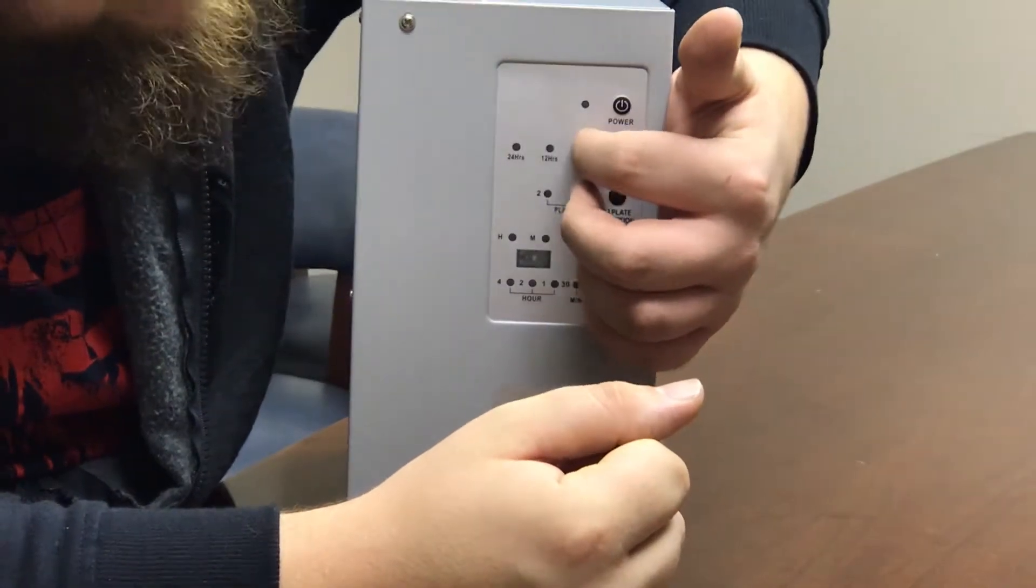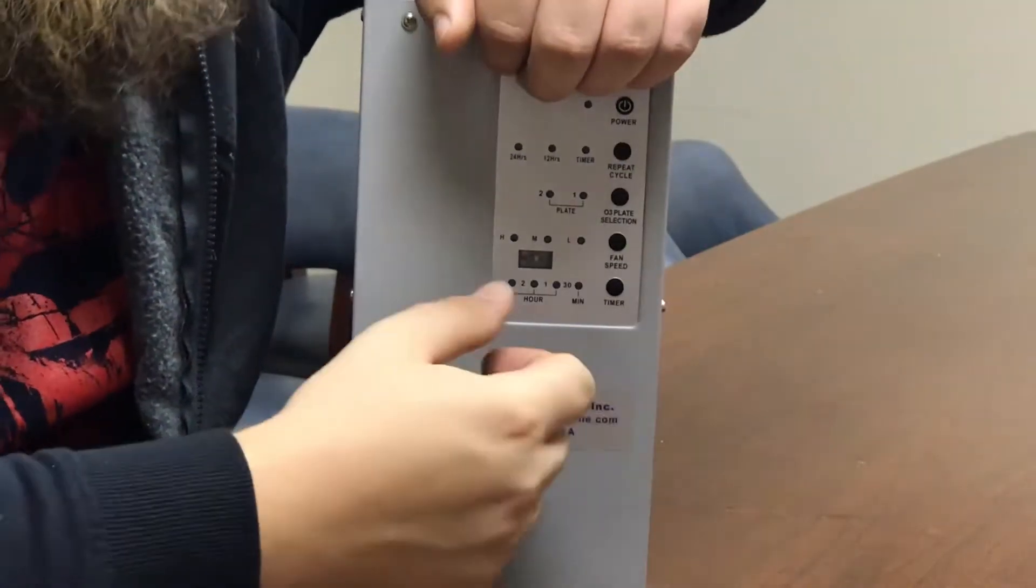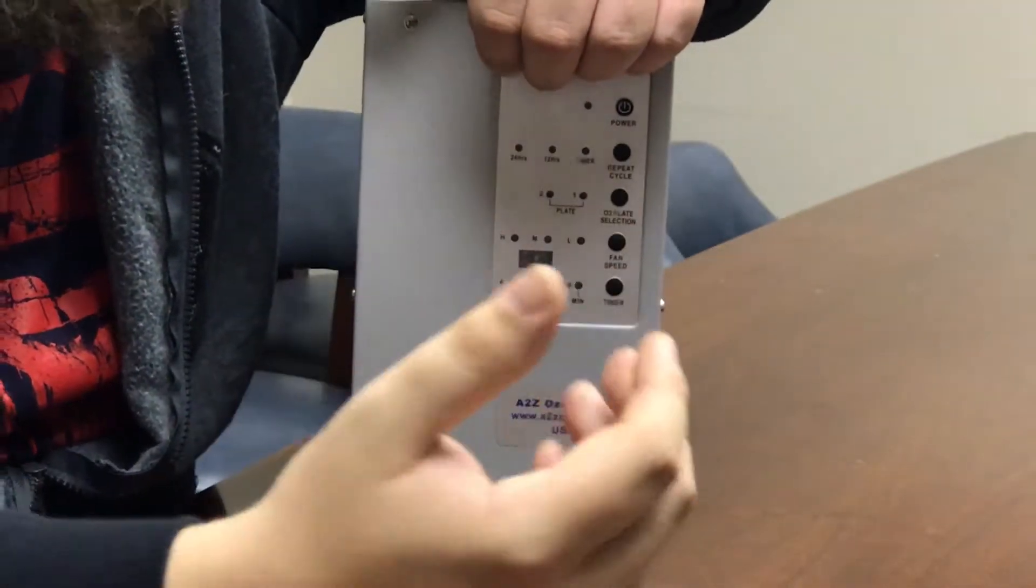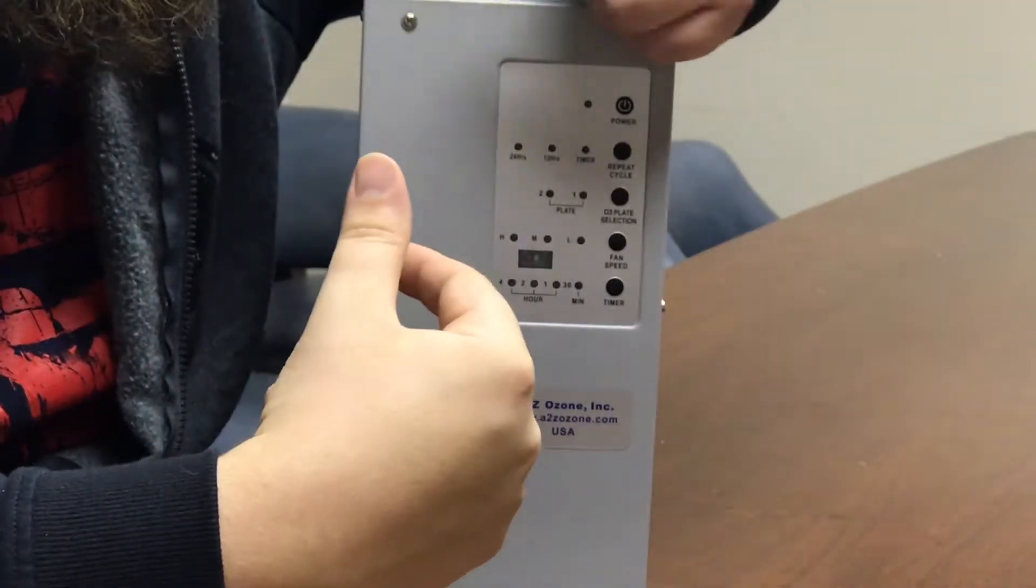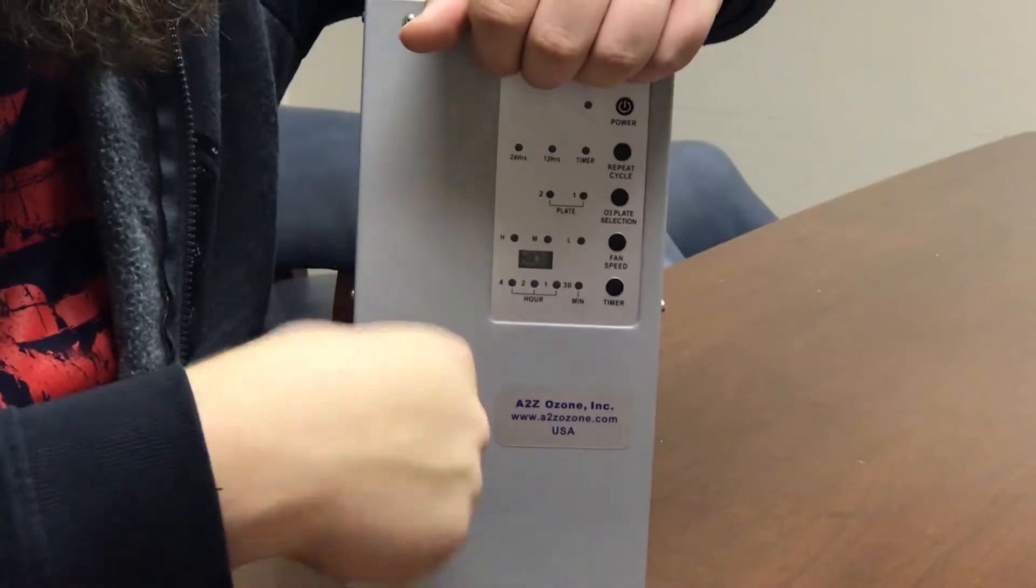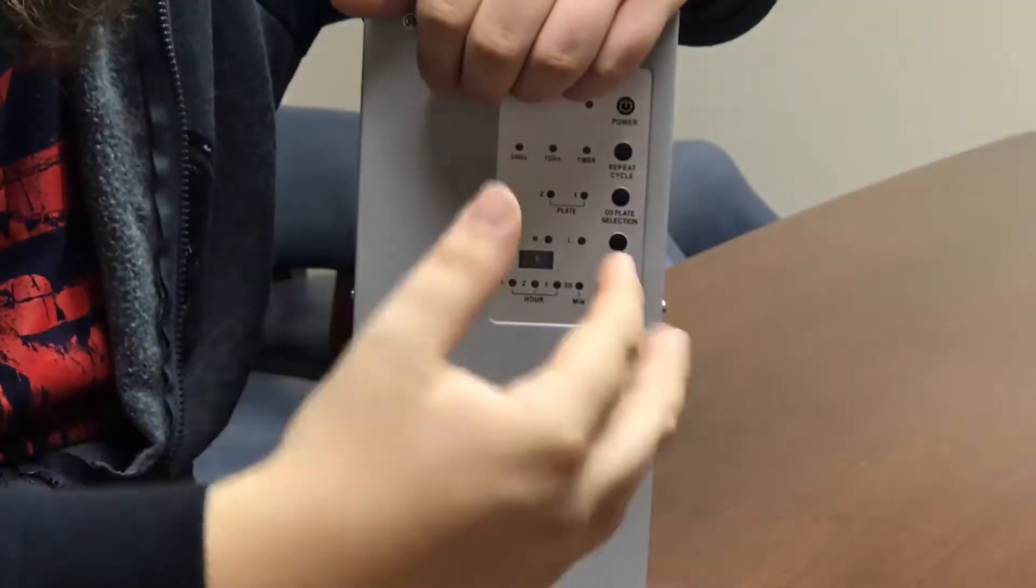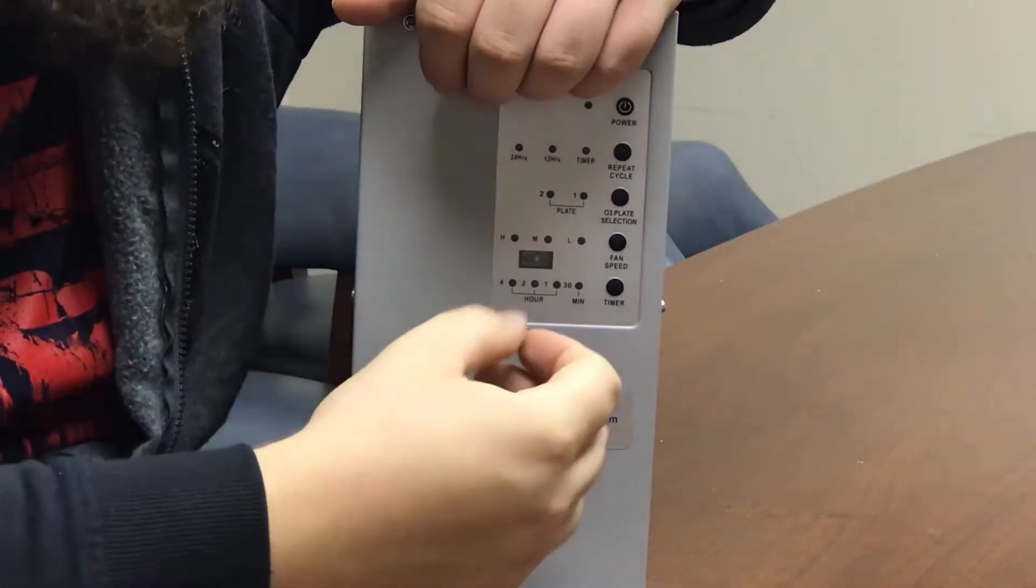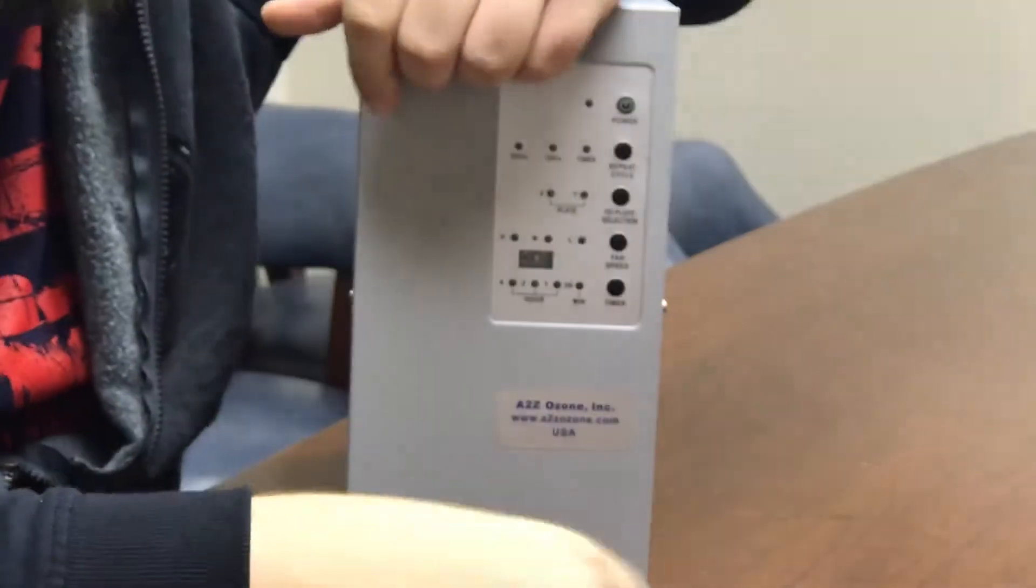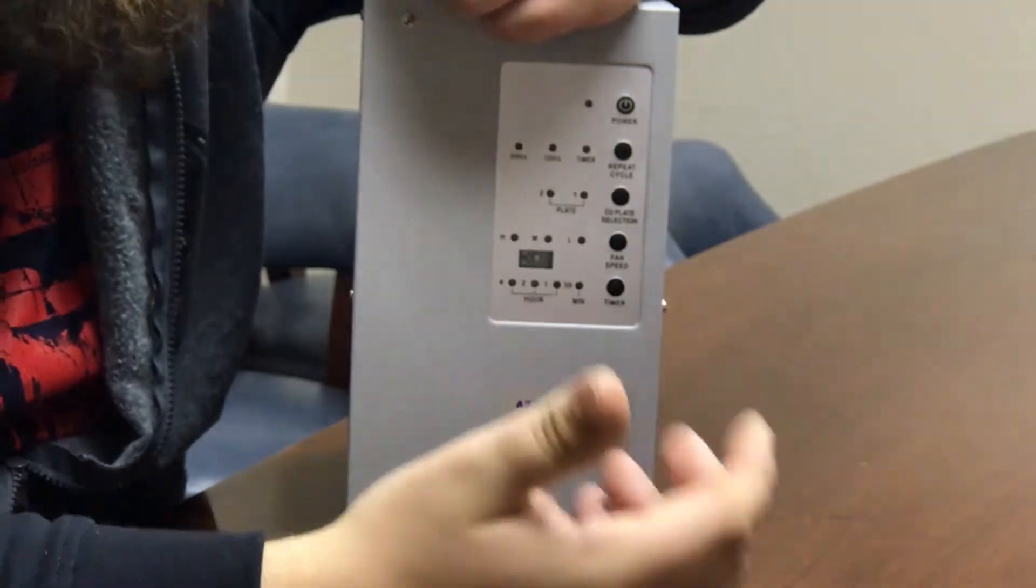You can set your repeat cycle timer for 24 hours. Your unit would run for the half hour and then go into its cooldown cycle for the next 24 hours. It'll start every morning at 8 o'clock, whenever you set this up, run for its half hour, then turn off for another 24 hours until it reaches that mark again.